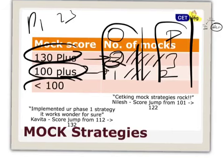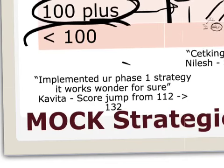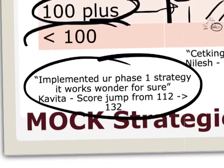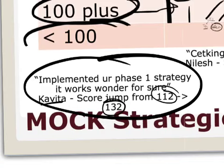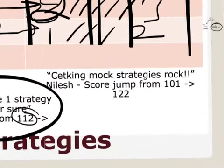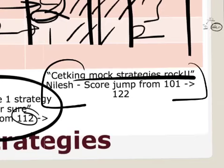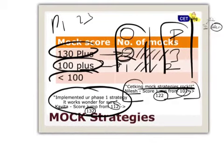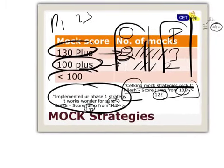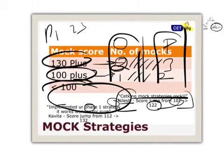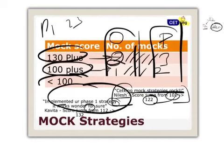We have to improve yourself on a paper base, then go online. These are the feedbacks we have got from Facebook from my program. Implemented our phase 1 strategies, truly works wonders. Like Kavita - increased score from 112 to 132, that's a live example. Another example of Milesh - mock seeding strategy work, jump from 101 to 122, approximately 20 marks jump you can expect from the seeding program. You have to work on the mocks strategy according to the plan. That is your plan - if you are 130 plus, 5 marks a week; 100 plus, 3 marks; less than 100, 1 more.